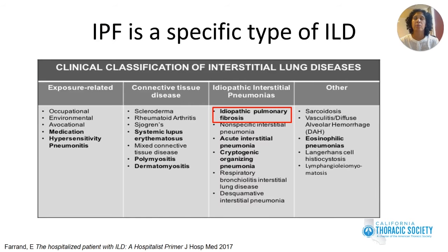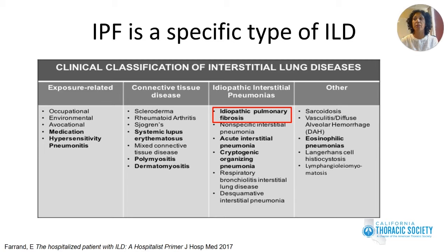IPF is one of over 200 types of interstitial lung disease — it is a specific type of ILD. Although patients often think of IPF and ILD as synonymous, there are many different types. I think of them in buckets: exposure-related (environmental, medications, workplace), connective tissue disease or autoimmune, idiopathic pneumonias where IPF falls, and a long category of other ILDs. Thinking in buckets makes it much more manageable to arrive at the correct diagnosis.